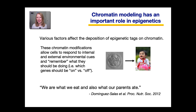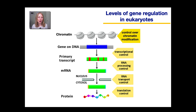This is the conclusion of part one of gene regulation in eukaryotes. In part one we focused on control over chromatin modification — how chemical tags added to either the DNA molecule or the histones affect the transcription of genes. In future lessons, we will talk about the other levels of gene regulation. That's it for today.